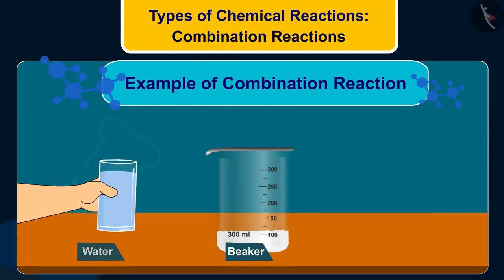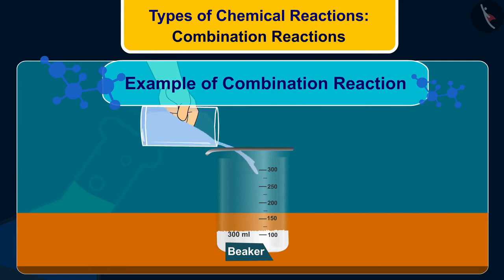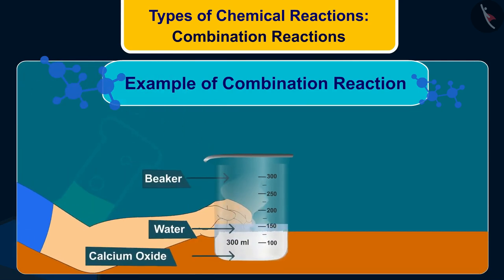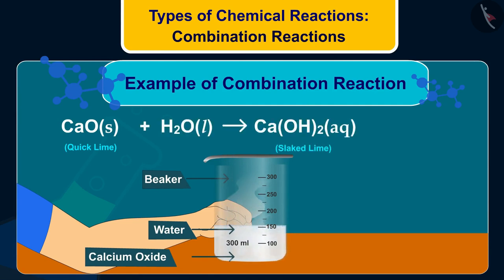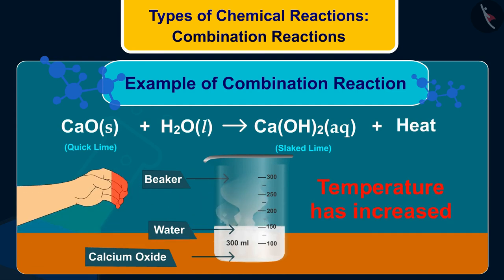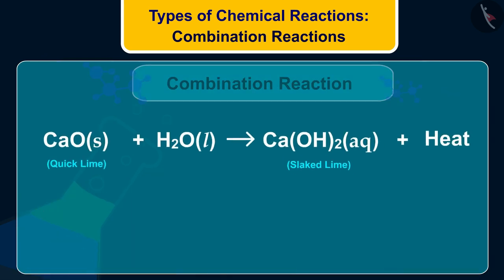Take some calcium oxide (quicklime) in a beaker and add some water to it, then touch the beaker. Calcium oxide reacts vigorously with water to form slaked lime — that's calcium hydroxide — and releases a large amount of heat energy.